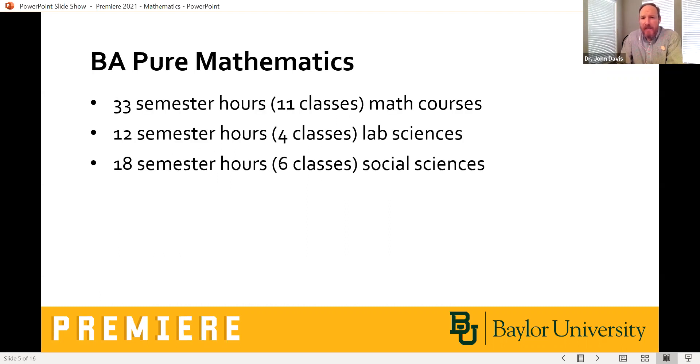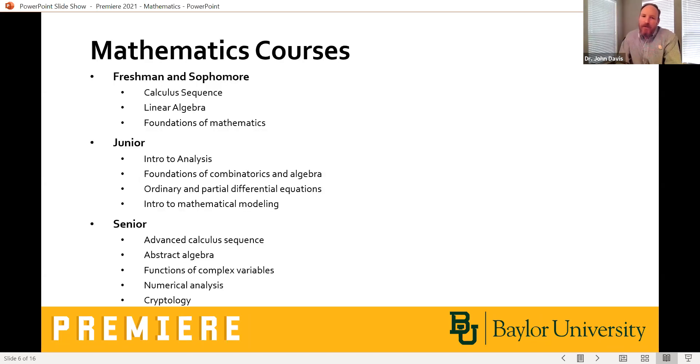For the BA in pure mathematics or theoretical mathematics, this gives you an overview. You can see the catalog for detailed descriptions of what your options are within these categories. But this gives you a feel for the size of the requirements in terms of math and lab sciences and social sciences that people often ask about. How many hours of lab do I have to have to be a math major? To give you a feel for our mathematics courses, and these are just general guidelines. Again, you can see the catalog, or you feel free to ask me for detailed descriptions.